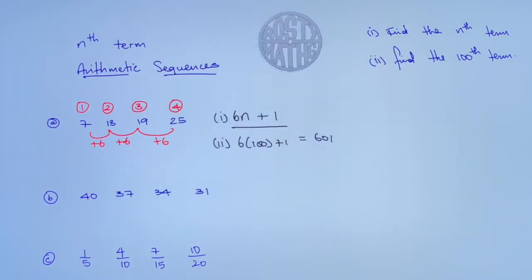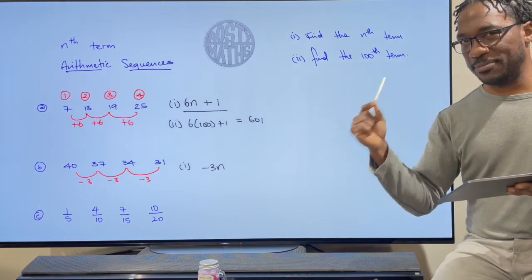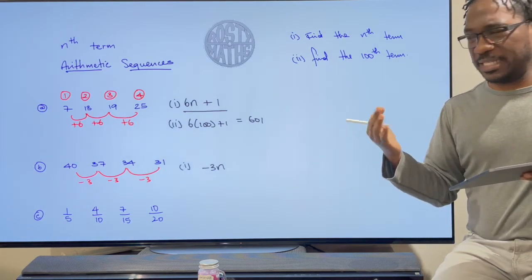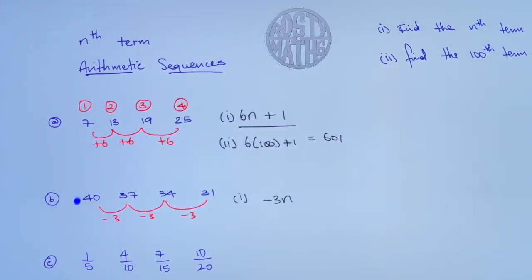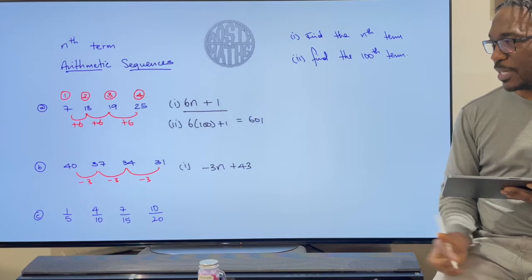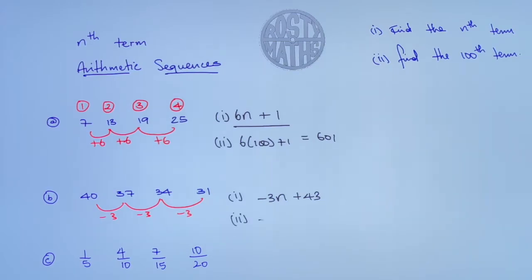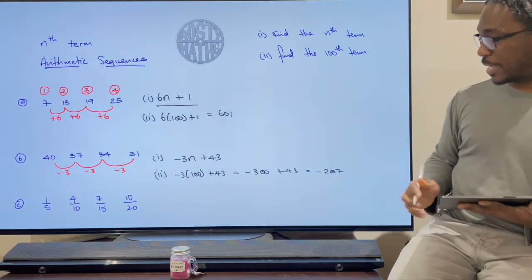Let's check the second example. How is this sequence going? It's not going up — it's actually going down, taking away 3 every time. So if it's taking away 3, we get −3n. Notice I put the minus in there — really important. Then using Method 1, what comes before 40 if it's going down in threes? That would be 43. So our nth term is −3n + 43.